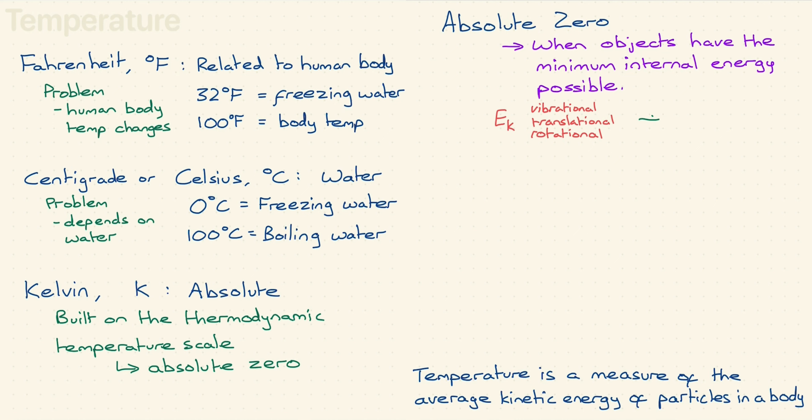Absolute zero is when these reach their minimum possible values, which is also when the internal energy reaches its minimum possible value. U becomes its lowest possible.